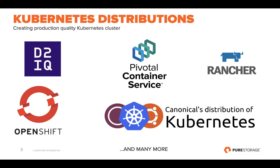Kubernetes has taken off immensely and is growing at a very fast rate. Apart from open source Kubernetes, there are various different distributions. D2IQ has come up with their flavor of Kubernetes called Convoy, which is what we'll focus on in this presentation. Customers have a choice depending on business requirements — whether they choose Convoy versus Red Hat OpenShift is determined by business parameters, ecosystem, and intended utilization.